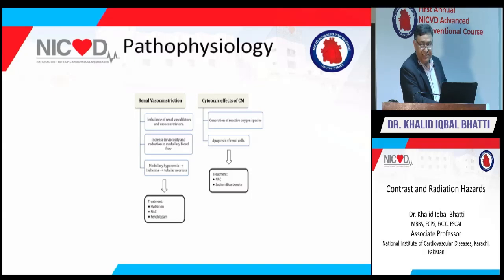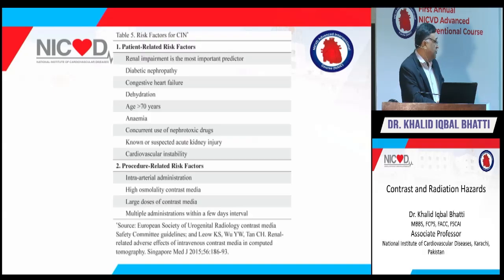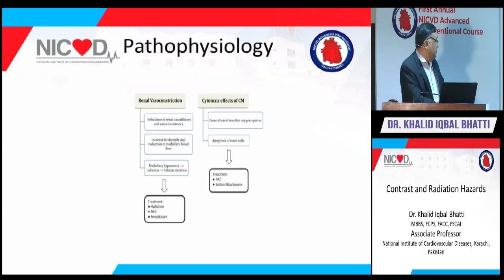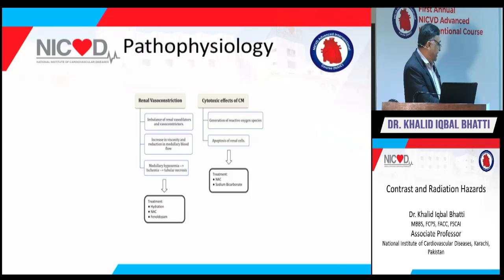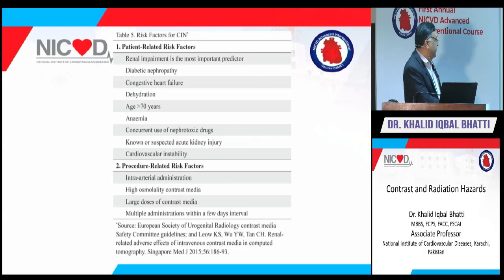The pathophysiology of contrast-induced nephropathy involves two main mechanisms. First, renal vasoconstriction — an imbalance between vasodilators and vasoconstrictors — leads to medullary hypoxia, ischemia, and tubular necrosis. Second, the cytotoxic effects of contrast media generate reactive oxygen species and cause apoptosis of renal cells, both contributing to contrast-induced nephropathy.